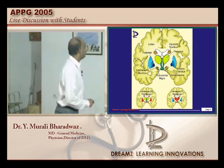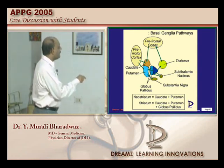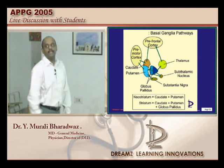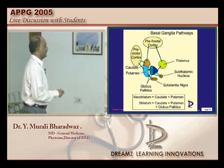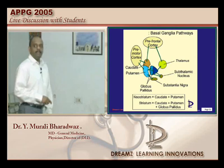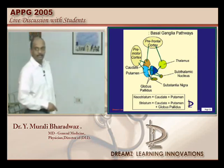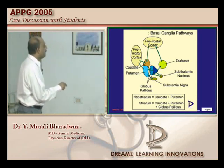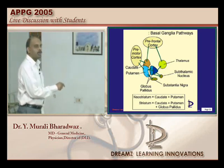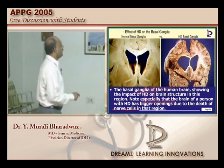Connections of the basal ganglia are also very important. The prefrontal cortex is connected with the caudate nucleus, and the premotor cortex is connected with the caudate and the putamen. Caudate plus putamen together is called the neostriatum. Striatum means caudate plus putamen plus globus pallidus. Globus pallidus has two components — globus pallidus interna and globus pallidus externa — and this whole thing together is called the striatum.